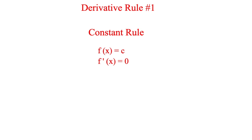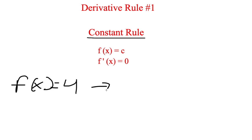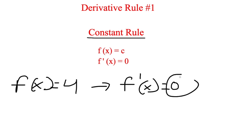When finding the derivative, the first rule is the constant rule. For this rule, any constant — taking the derivative of it — will be 0. So if we have f of x equals 4 and we take the derivative of that, f prime equals 0. Any constant — 4, 100, 1000, 2000 — any number by itself with no variable is equal to 0. That's the first rule called the constant rule.